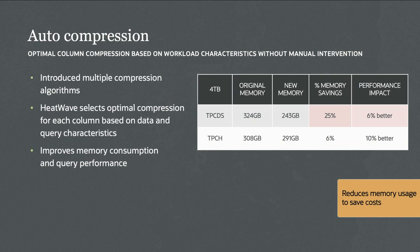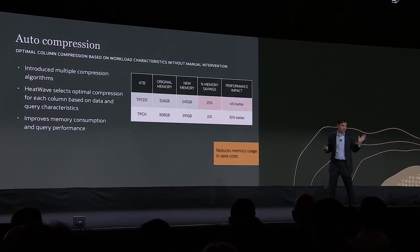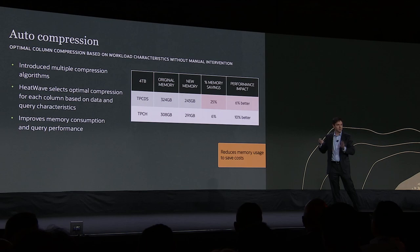We've also added auto compression, where HeatWave figures out what data in memory should be compressed. For TPC-DS, this delivers 25% memory savings. You might think compression would make queries slower due to decompression overhead, but the answer is actually no — things generally get a little faster. In TPC-DS with 25% compression, queries run 6% better. In TPC-H with 6% memory compression, queries run 10% faster. The reason is that modern CPUs are much faster than memory, so it's worth compressing to move less data in and out of memory.